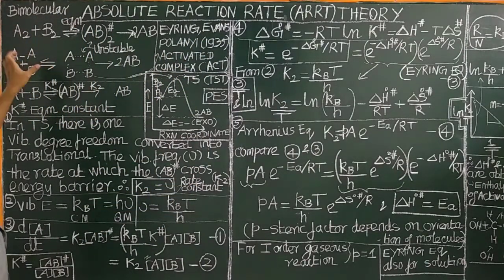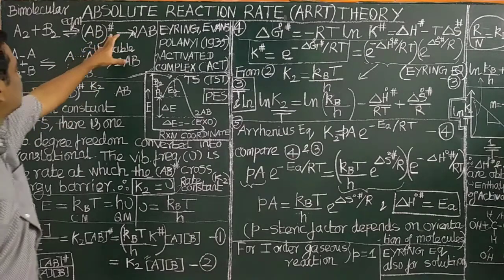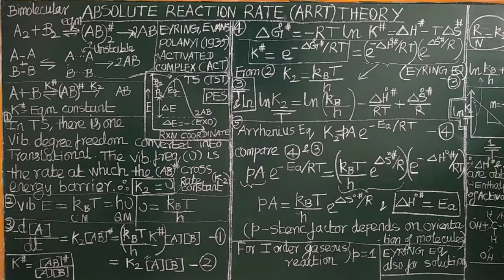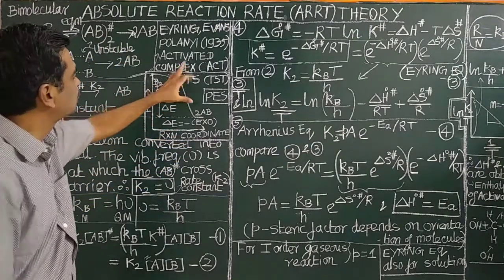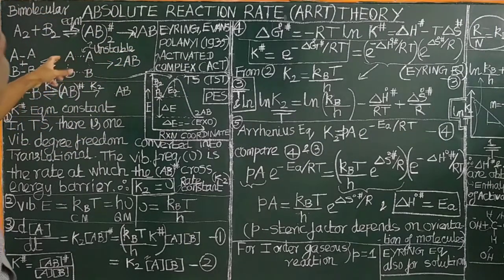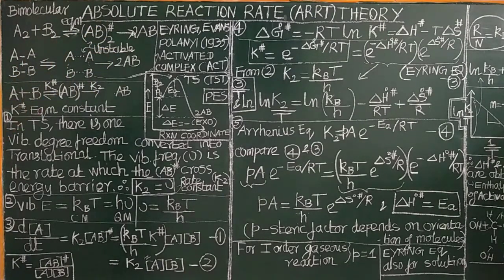For simple bimolecular reactions, A2 plus B2 in reversible equilibrium gives the activated complex AB. The activated complex is produced by collision of A2 and B2 molecules. This activated complex is very unstable and is high in energy state. Therefore, it decomposes to give two molecules of AB. The first process is an equilibrium process.